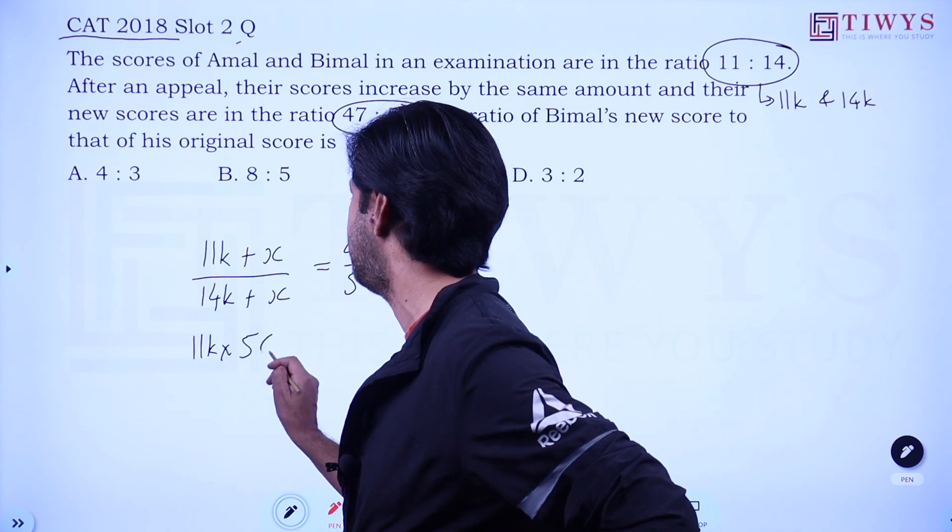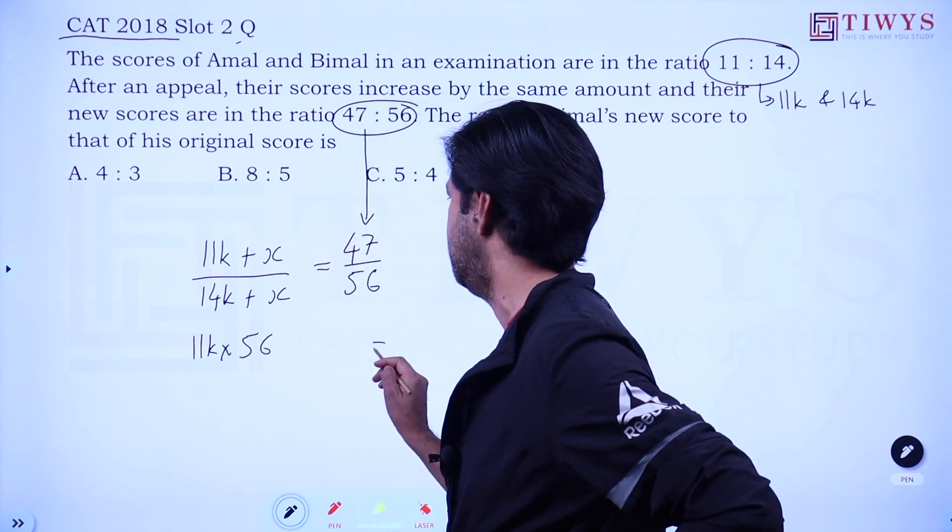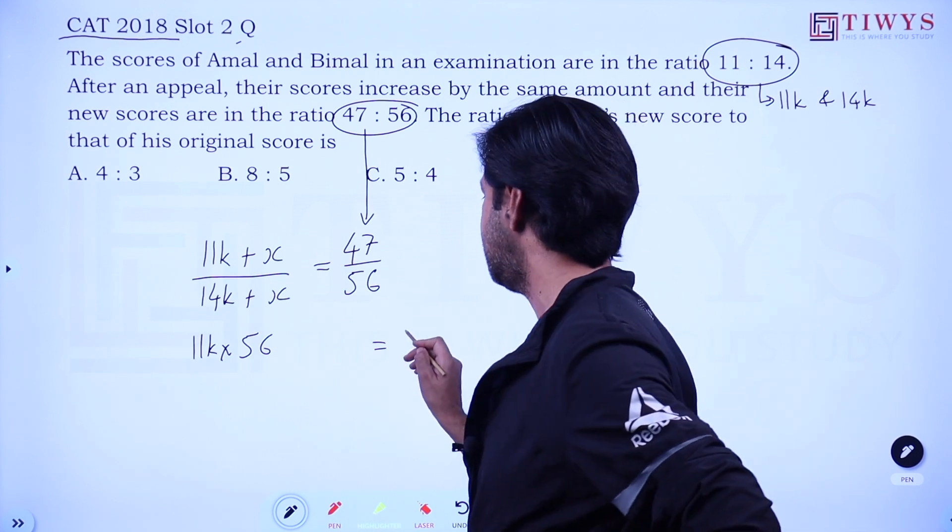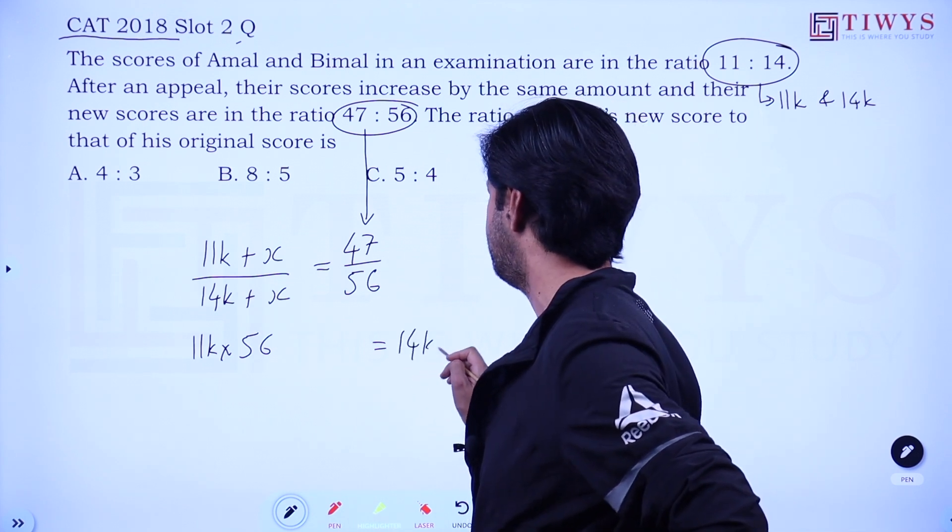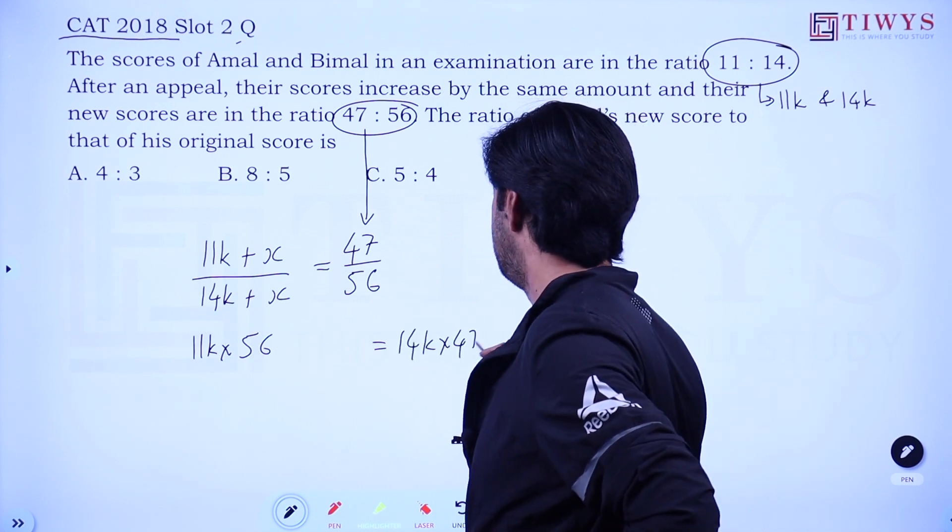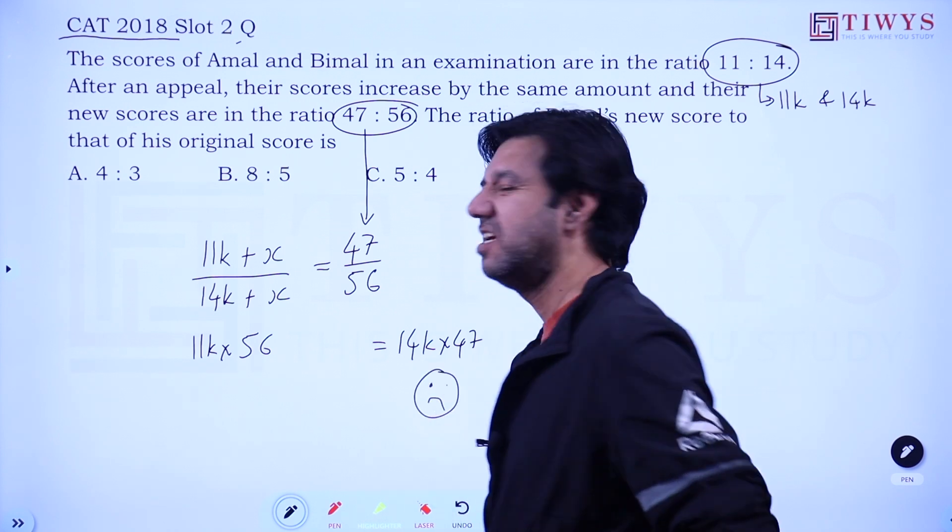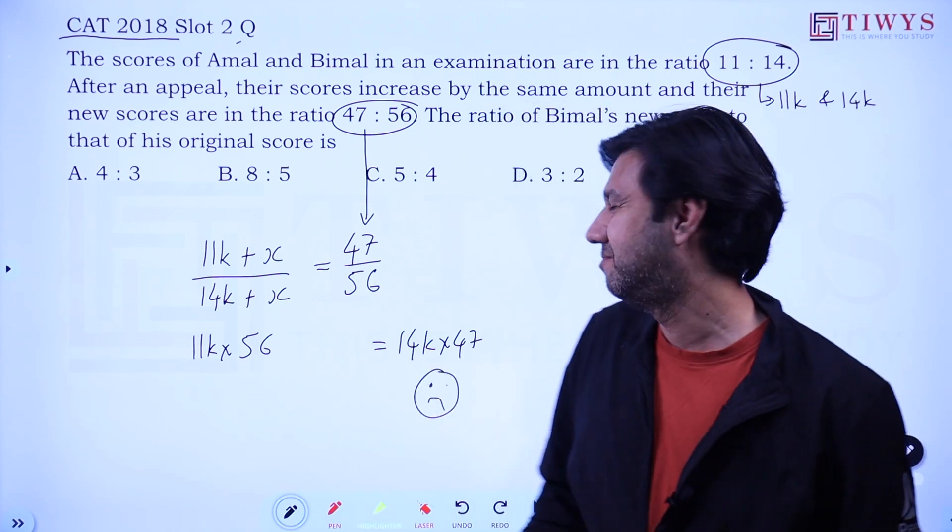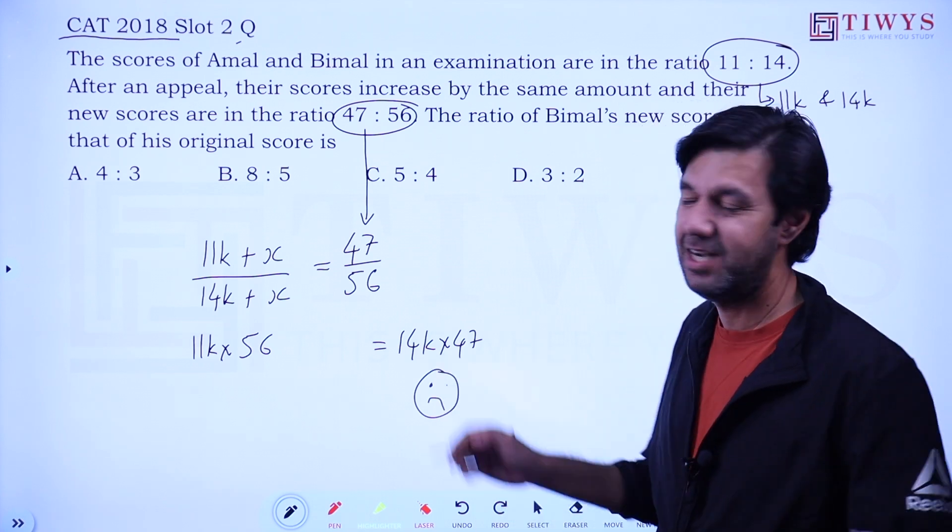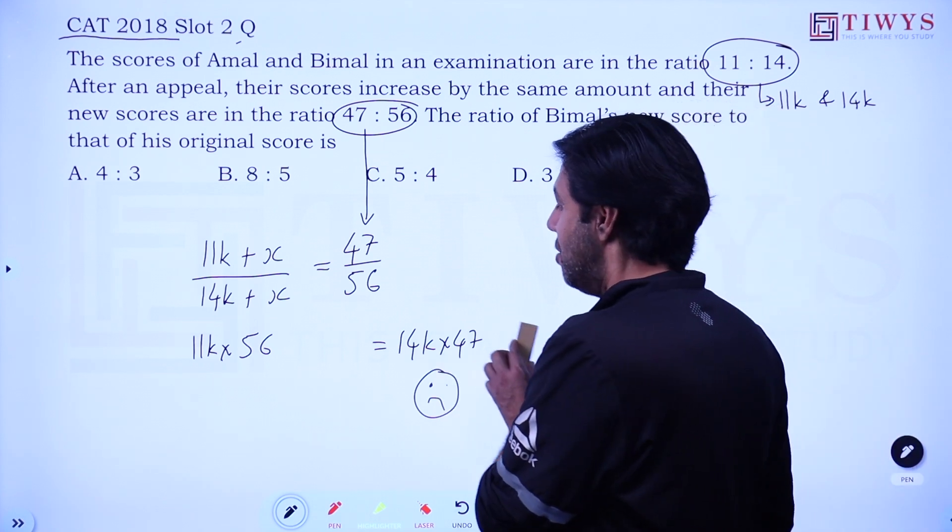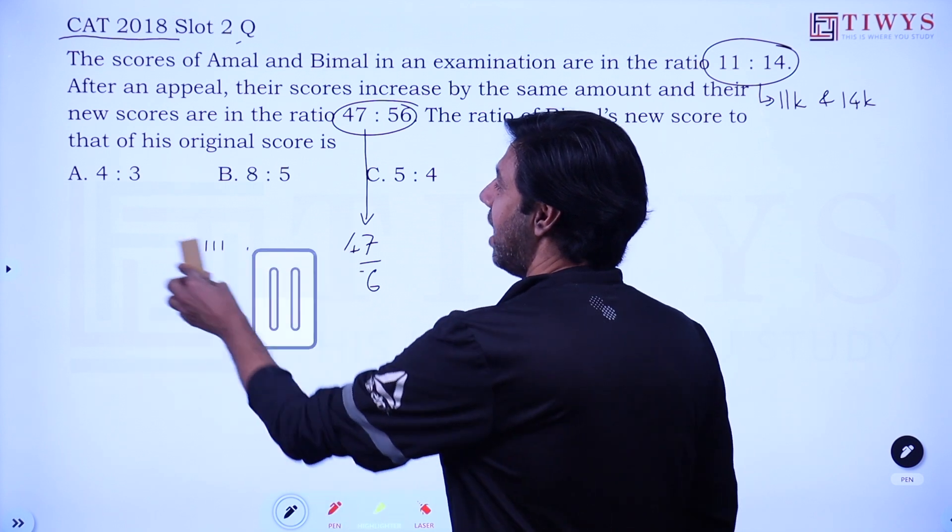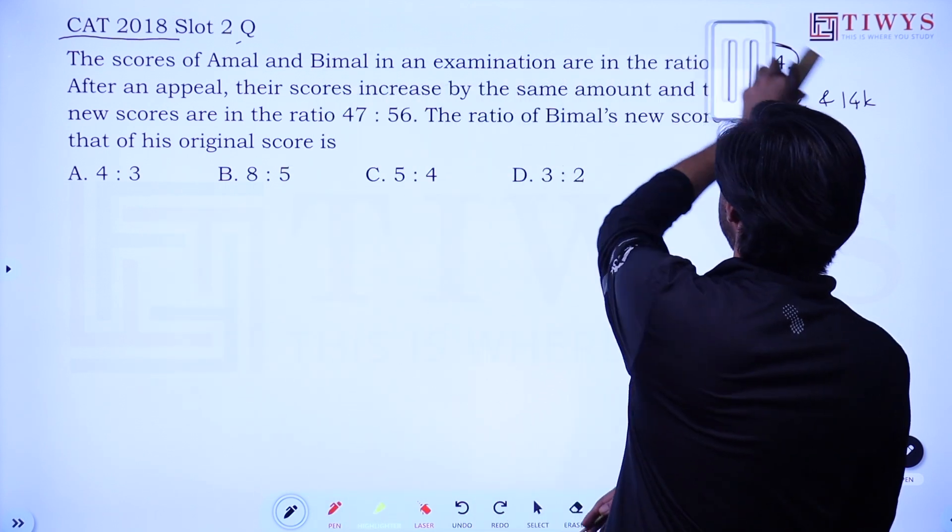But the problem is when you solve this, you need to do a little bit of tedious calculation. Multiplying by 11 is not a problem, but on your right-hand side, you would need to multiply 14k by 47, which is not a very nice technique. So what is the alternate way to avoid all this calculation?